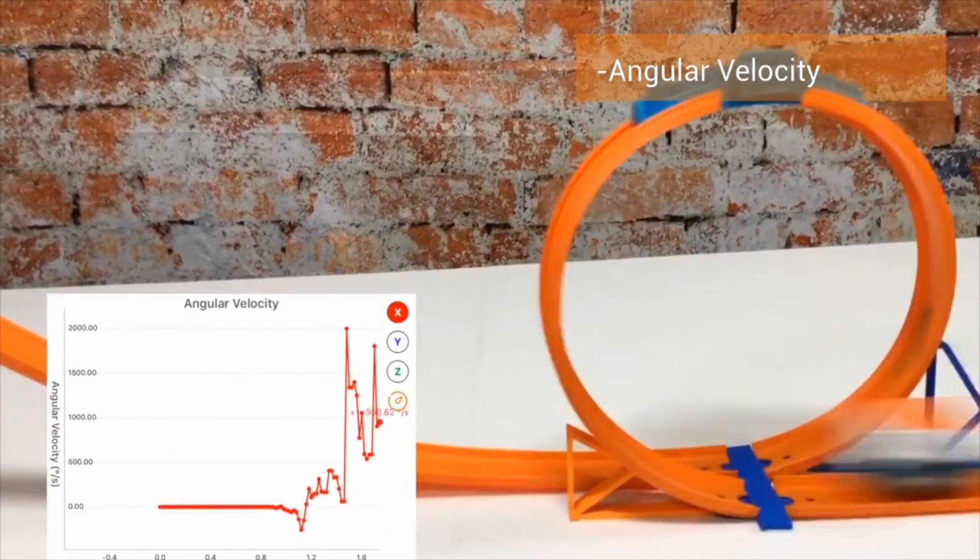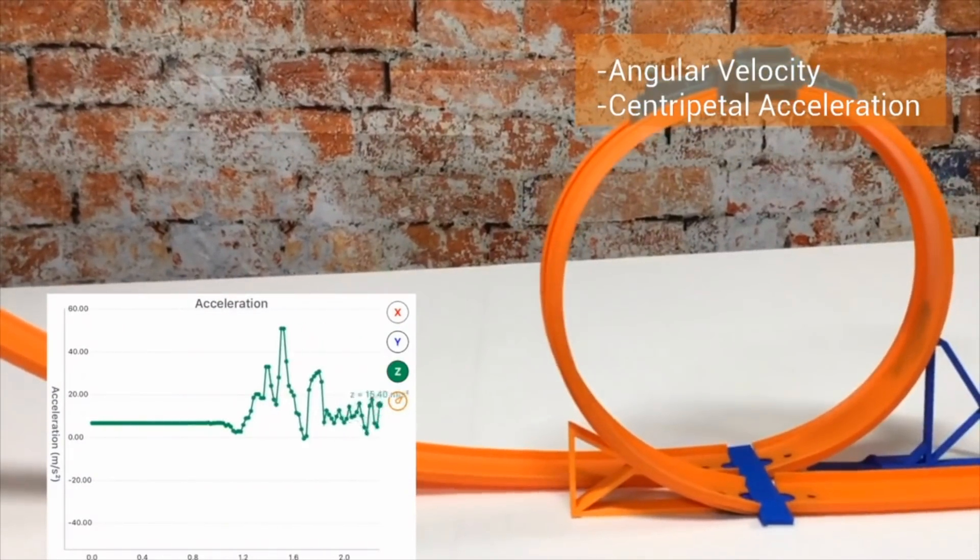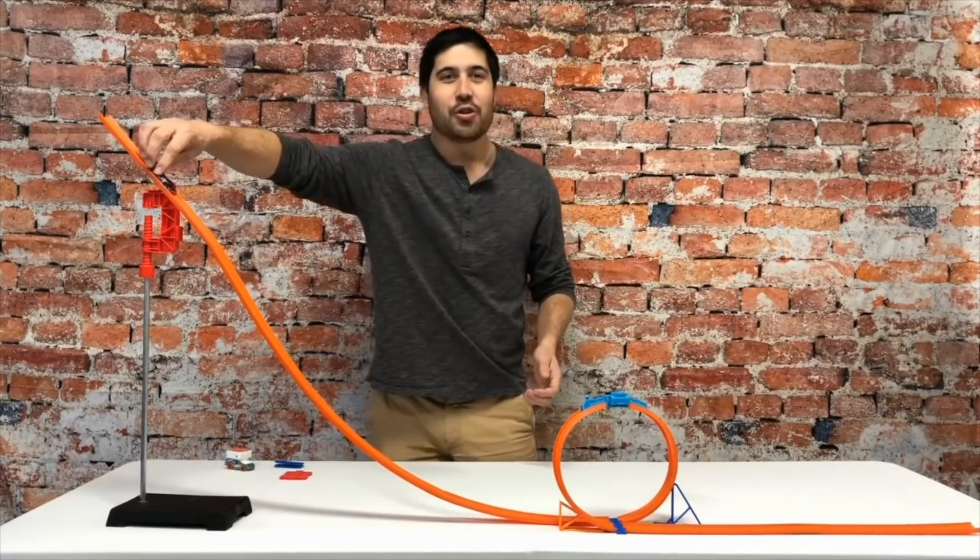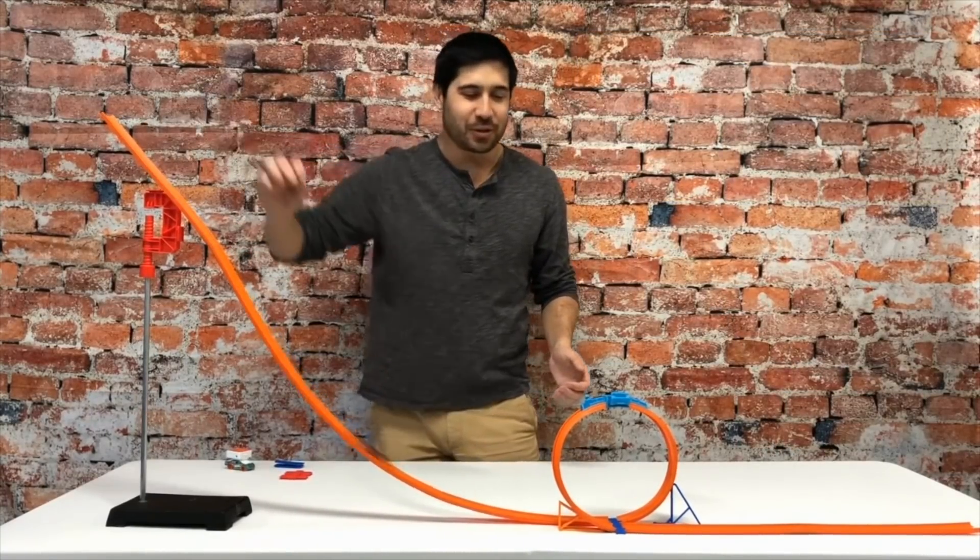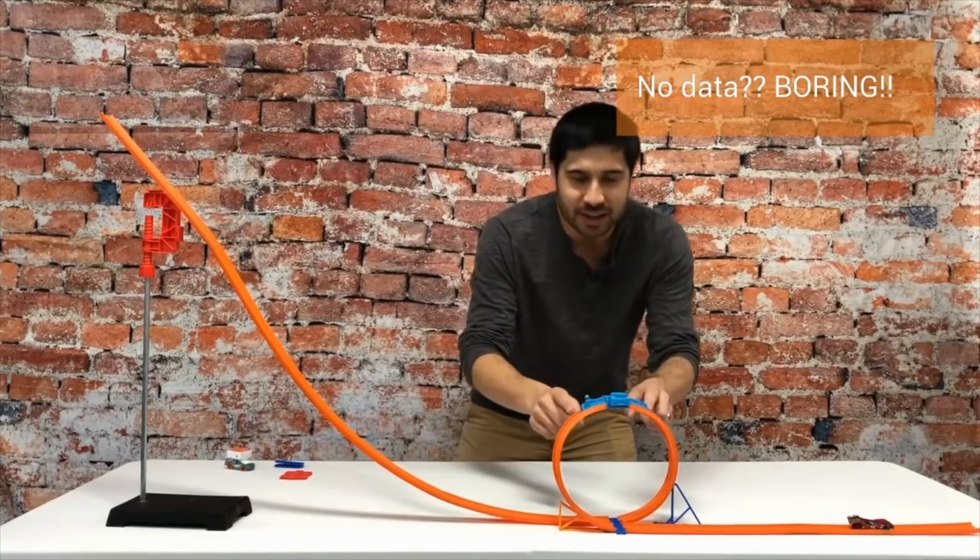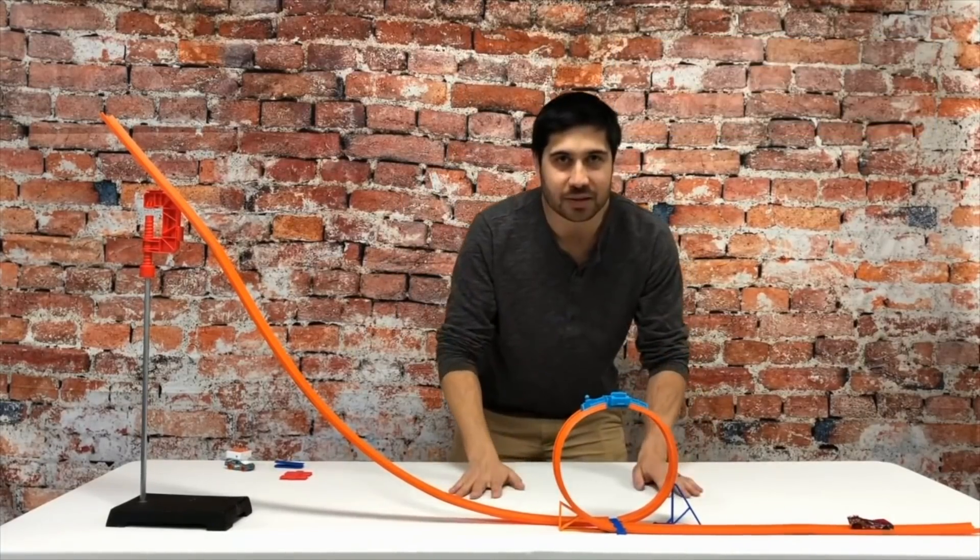Angular velocity, centripetal acceleration. But how do we get data out of something like this? Normally, if you put a Hot Wheels car on a Hot Wheels track, you can see what's going on, but it's very difficult to get data out of anything that we see.